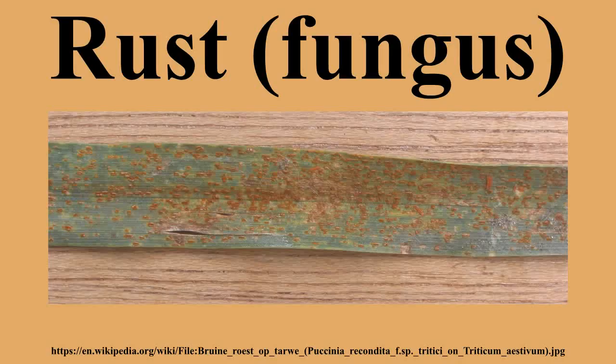Puccinia graminis is a macrocyclic heteroecious fungus that causes wheat stem rust disease. The repeating stage in this fungus occurs on wheat and not the alternate host. The repeating stage allows the disease to persist in wheat even if the alternate hosts are removed. Planting resistant crops is the ideal form of disease prevention; however, mutations can give rise to new strains of fungi that overcome plant resistance. Although the disease cannot be stopped by removal of the alternate host, the life cycle is disrupted and the rate of mutation is decreased due to reduced genetic recombination, allowing resistant crop varieties to remain effective for a longer period of time.